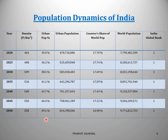Urban population percentage will increase to 49.1%, meaning almost 50% of India's population will be living in urban areas. Urban population in numbers will be more than 81 crore. Country's share of world population will slightly reduce to 16.98% due to decreased population growth rate. World population will increase further to more than 977 crore. India's global rank: it is second only in 2020 — after that throughout 2025 to 2050 it will be number one, as India will be surpassing China.